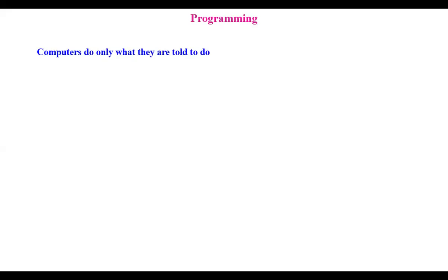Coming to programming, computers do only what they are told to do. Computers are nothing but a simple box with a processor. Whatever instructions we give to the computer, it acts accordingly — it cannot act on its own. We have a saying: GIGO — garbage in, garbage out. If we give garbage, it gives garbage back.